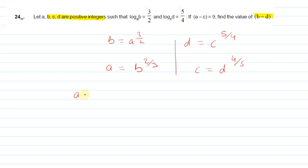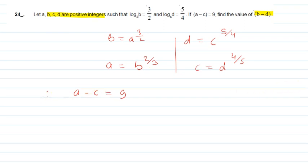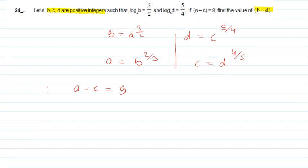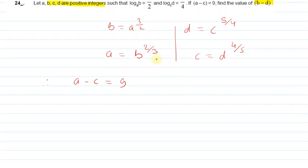And a minus c is equal to 9. So this is equal to 9. a equals b power 2/3 and c equals d power 4/5, and this is equal to 9.